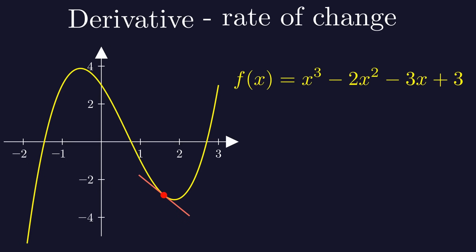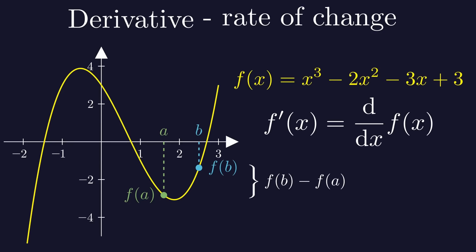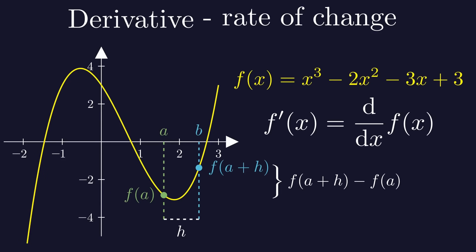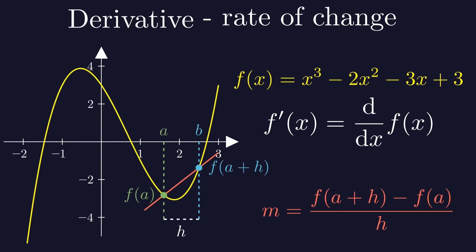The derivative of the function f is denoted as f' or as d over dx. To calculate the derivative, let's start with calculating the slope of the line going through two points. Suppose we pick two points on the graph at x equal to a and x equal to b. Their y coordinates are respectively f of a and f of b. So the height difference between those two points is equal to f of b minus f of a. The horizontal distance between these points is equal to b minus a. Let's call that length h. Now we can also write f of b as f of a plus h. The slope of the line going through those two points is equal to f of a plus h minus f of a divided by h.